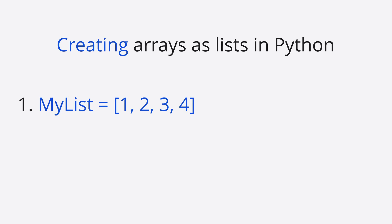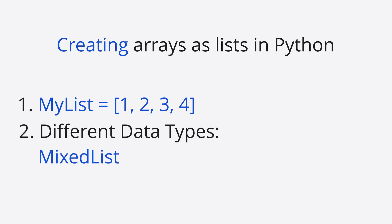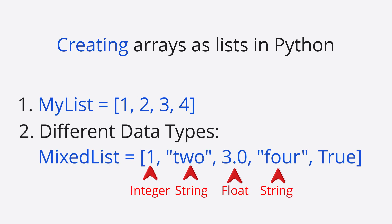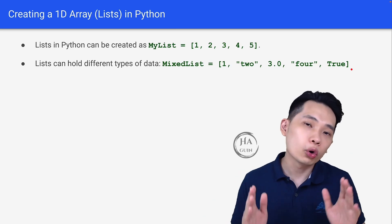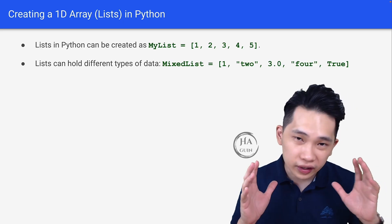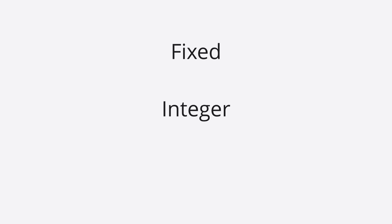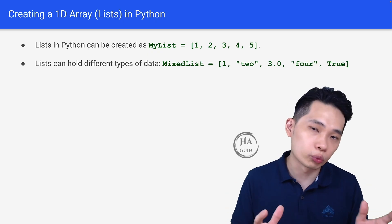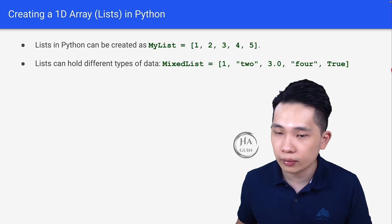Furthermore, lists can hold different types of data. For example, mixList is equal to 1 (integer), '2' (string), 3.0 (float), '4' (string), and True (boolean). This only applies to lists in Python. In general, for other programming languages, the data type for the array is always fixed — either integer, boolean, or string. But because we are using lists to replace arrays in Python, this is pretty dynamic.